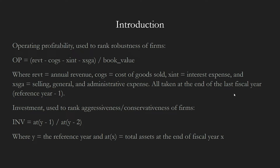The robustness and aggressiveness of a firm is determined by the operating profitability and the investment, respectively. Operating profitability is calculated by the ratio of the difference between annual revenue and total operating expenses to the book equity or book value. The investment is calculated by the ratio of total assets at the end of the last fiscal year to the total assets at the end of the fiscal year two years before.